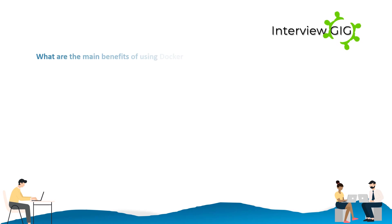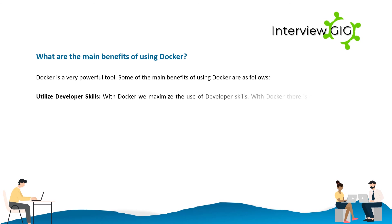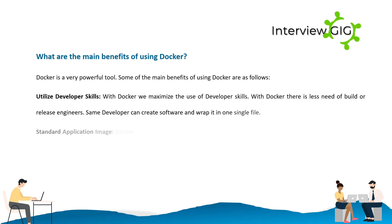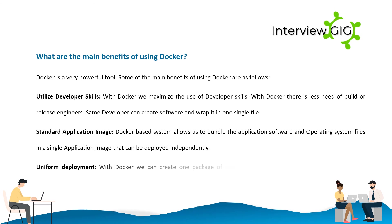What are the main benefits of using Docker? Some of the main benefits are: Utilize developer skills — with Docker we maximize the use of developer skills. There is less need for build or release engineers; the same developer can create software and wrap it in one single file. Standard application image — Docker-based systems allow us to bundle the application software and operating system files in a single application image that can be deployed independently. Uniform deployment — with Docker we can create one package of our software and deploy it on different platforms seamlessly.